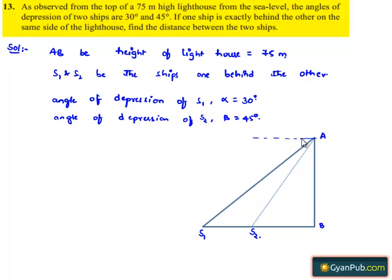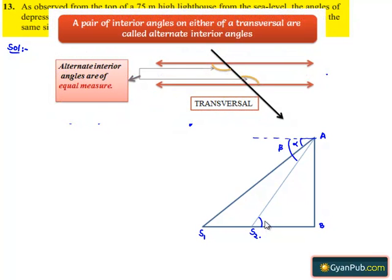Here, we assume that the angle of elevation of ship S1 is alpha and the angle of elevation of ship S2 is beta. If we observe the horizontal line through A, which is represented by the imaginary line, is parallel to S1B. Therefore, at S2, the angle will be beta and at S1, the angle will be alpha.